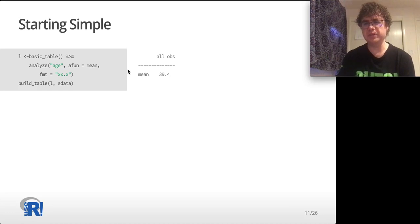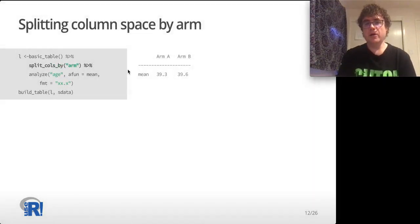Next let's say take your column, your universal all observations column, and split it by arm. What this means is we don't know how many arms there are in the data set. In this case there are two, but we could apply this same layout to a data set that had four arms and we don't need to know that. All we're saying is the layout says that for each value of the arm variable make a new column. So in this case because we have two arms we have two columns, and then we analyze the age variable the same as before, but now age is analyzed and the mean is taken for each of the two arms.